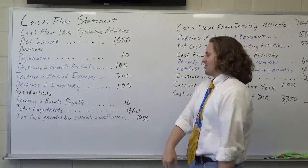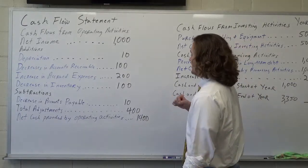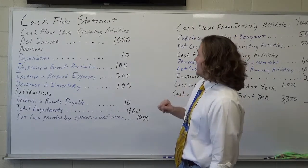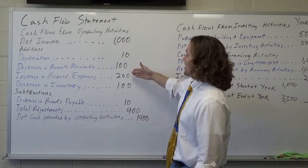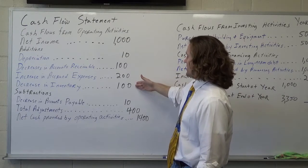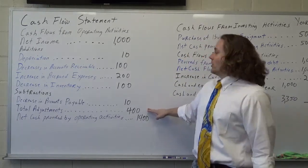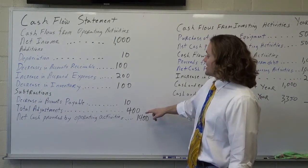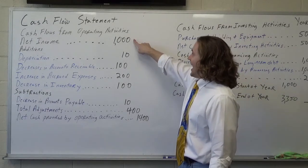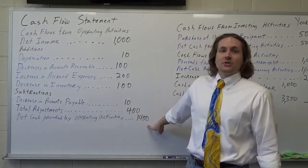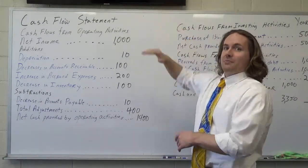Looking at the subtractions: a decrease in accounts payable — in other words, I've paid my vendors, I've paid my suppliers — just ten dollars. So I'm going to take ten plus a hundred plus two hundred plus a hundred and subtract ten, and that gives me a total of four hundred dollars for my total adjustments. I take the four hundred dollars in total adjustments, add it to my net income, and that gives a total of fourteen hundred dollars.